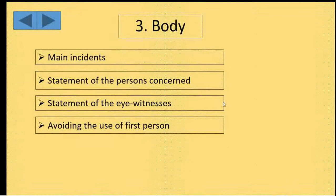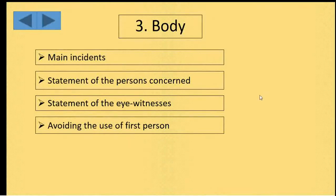Now the body. In the body, you will describe the main incidents. Then the statement of the persons concerned — you can describe the statement of the persons concerned. Statement of the eyewitnesses — you can mention the statement of the eyewitnesses. And you must avoid the use of first person. In a newspaper report, the reporter will not give any opinion or express his or her own opinion. So you will avoid the use of first person 'I,' because you will not say 'I think' or 'I suppose' — you will not make any comment.